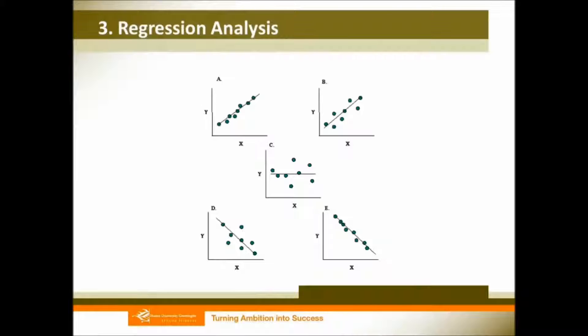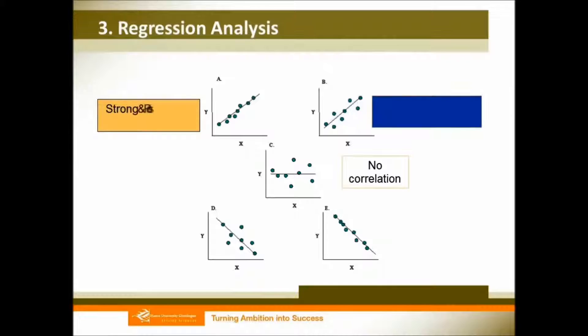Now let's look at these five figures: A, B, C, D, and E. In the middle figure, there is no correlation between our independent and dependent variable. The difference between figure A and figure B is that in figure A, all the data points tend to cluster around the trend line, while in figure B, all the data points are more scattered. So we say that in figure A there is a strong and positive correlation between x and y variables, while for figure B there is a moderate and positive correlation between x and y.